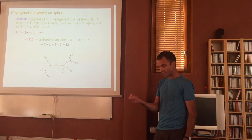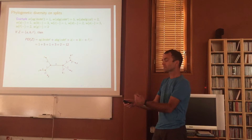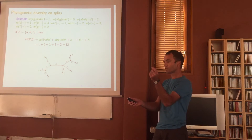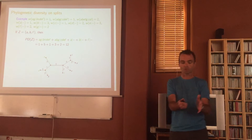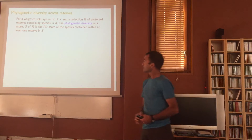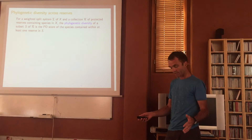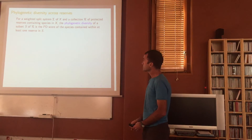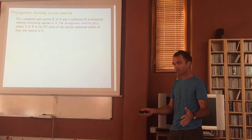Now we're talking about reserves. For a weighted split system, I've got a collection R of protected reserves, and those reserves contain subsets of X. The diversity of a subset of those regions is simply the PD score of the species contained within at least one reserve — it's the PD score of the union of that collection of subsets, where the subsets come from a bigger collection of subsets of X.